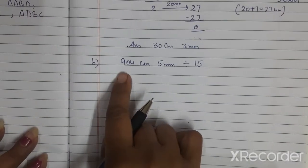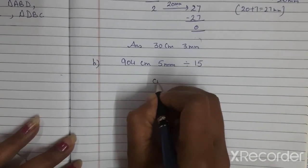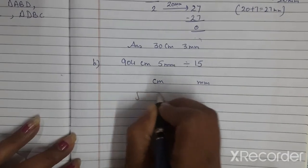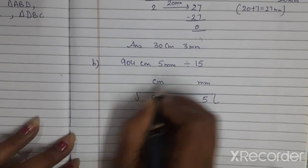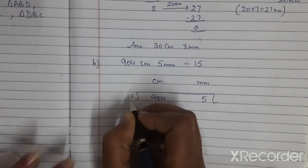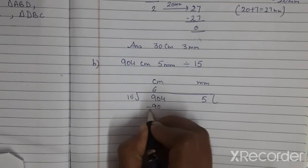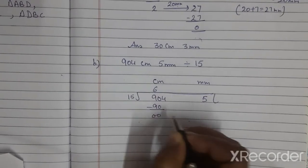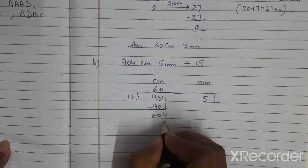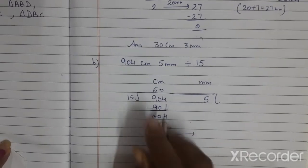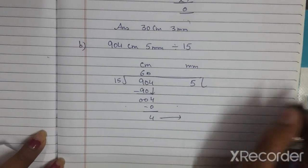Part B: 904 cm 5 mm divide by 15. Write centimeter here and millimeter here. Centimeter given is 904, millimeter given is 5, divide by 15. Now dividing the centimeter column by 15.